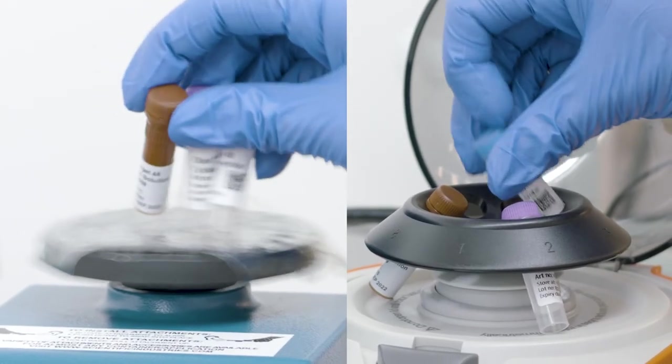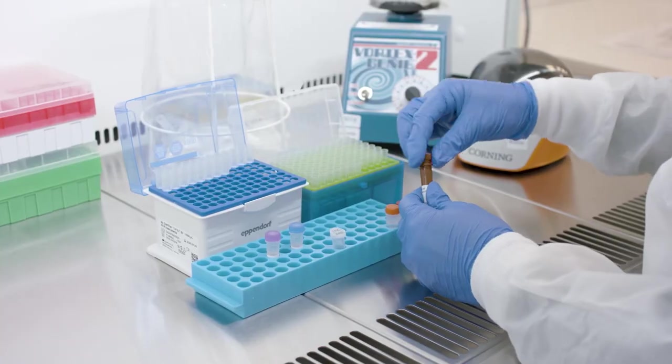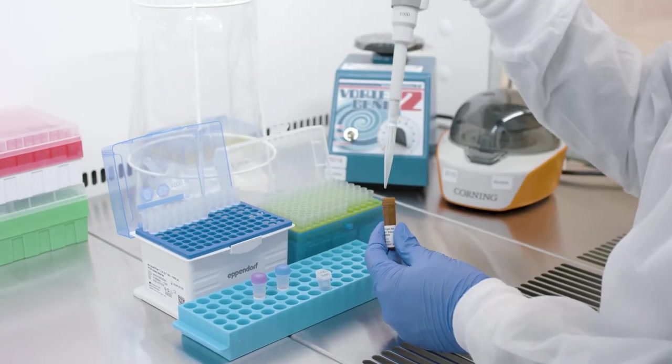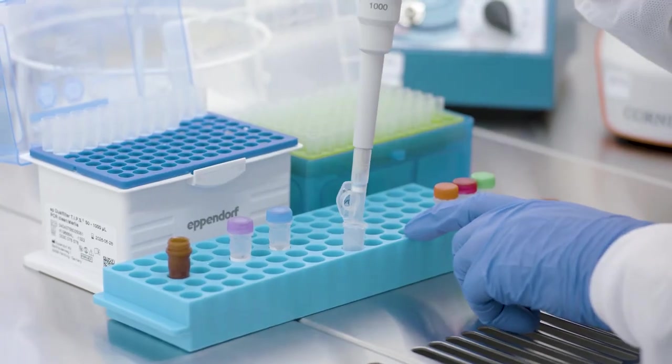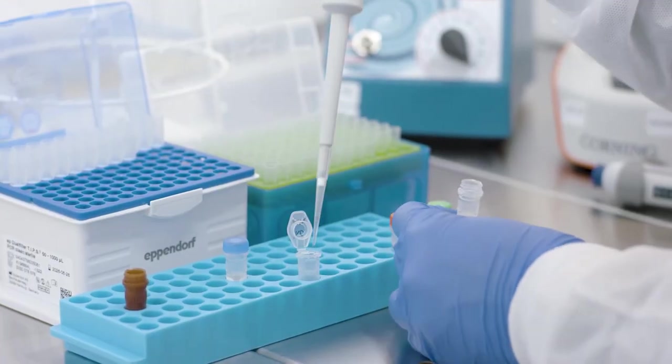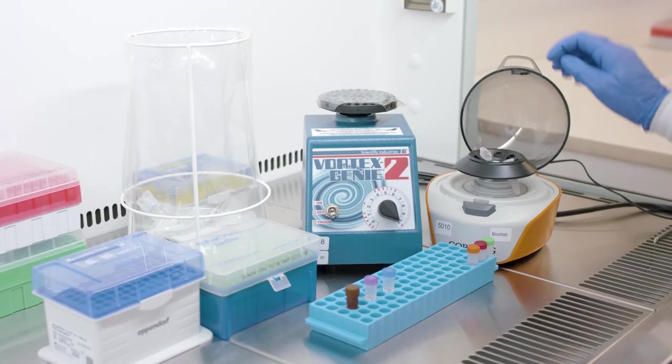Vortex and spin down all reagents before making the incubation mix. Prepare the incubation mix by combining the incubation solution and the target 48 forward and reverse probes in a microcentrifuge tube, according to the volumes mentioned in the O-Link user manual. Vortex and spin down the incubation mix.